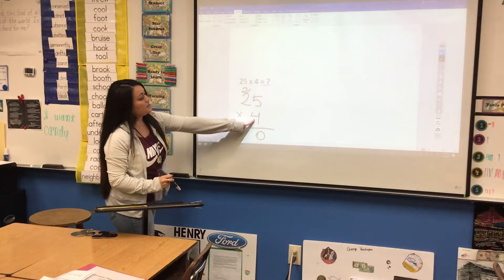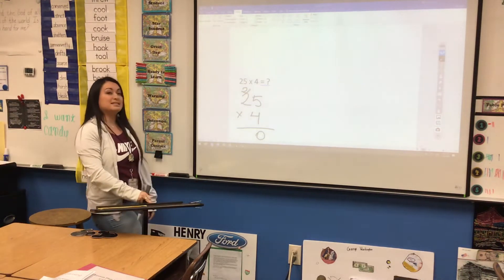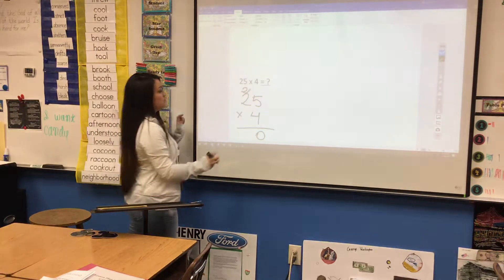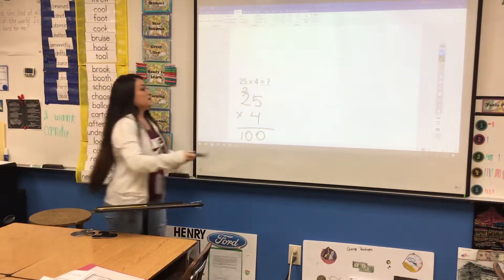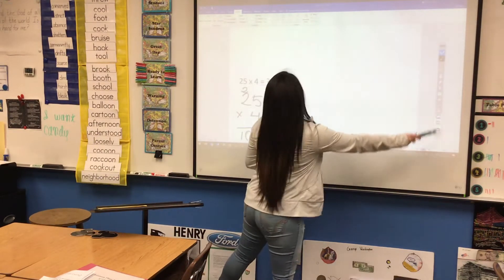Then you're going to multiply diagonally. 4 times 2, that's 8. Plus 2, don't forget to add that, is going to be 100. Not too bad. Just make sure we're stacking our problems.